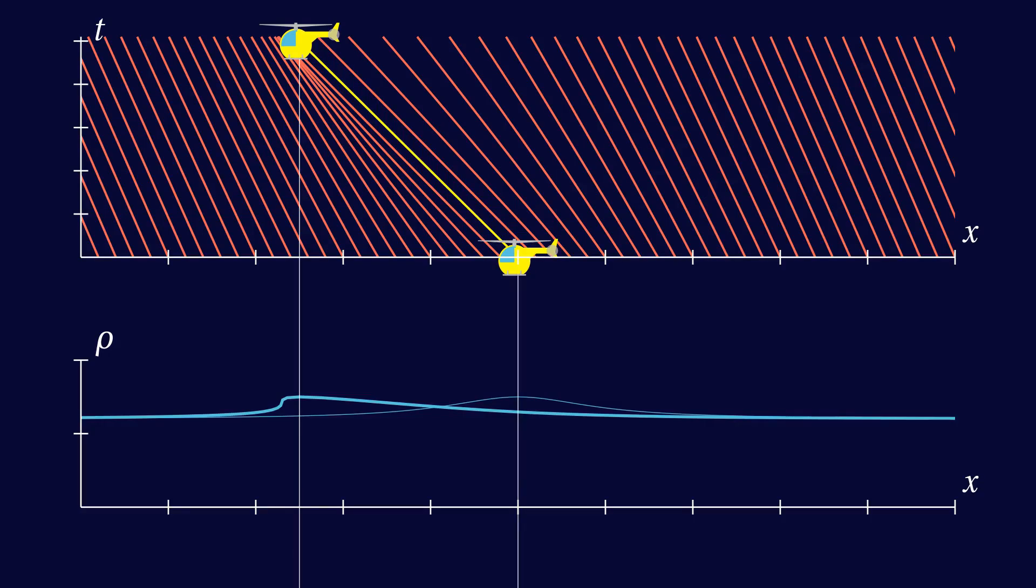Now, how do we know what the slope of a characteristic should be? Or put differently, what speed the helicopter should be doing to make sure it sees the same density at all time?